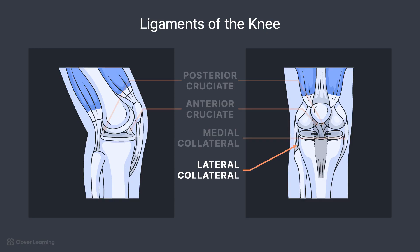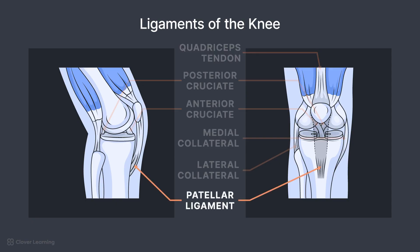Other important structures are the quadriceps tendon, attaching the quadriceps muscle to the patella, and the patellar ligament, which attaches the patella to the tibial tuberosity.